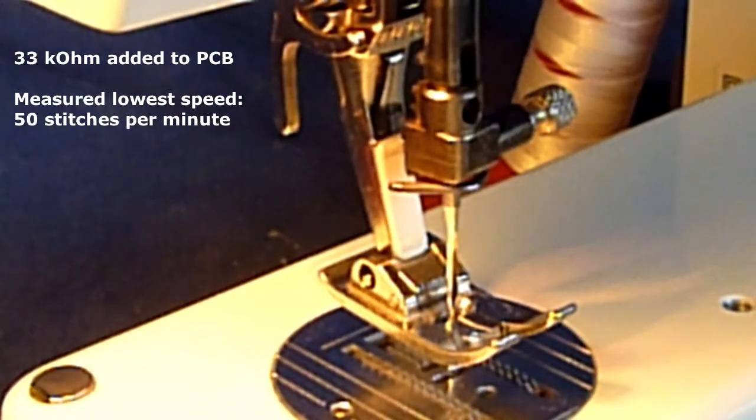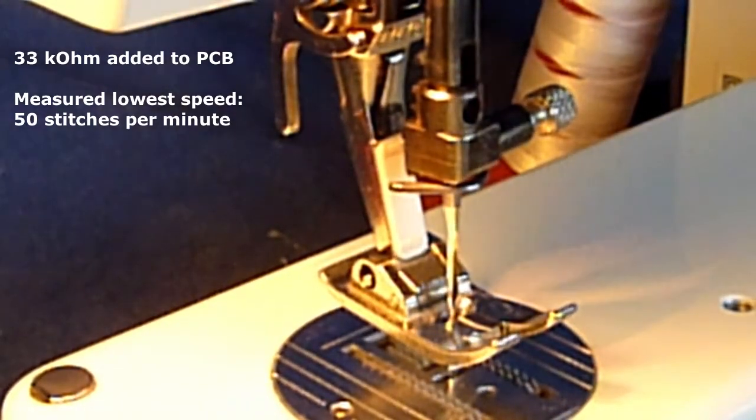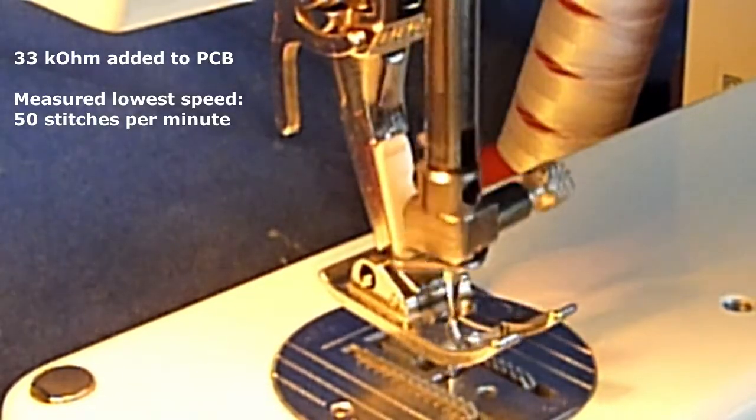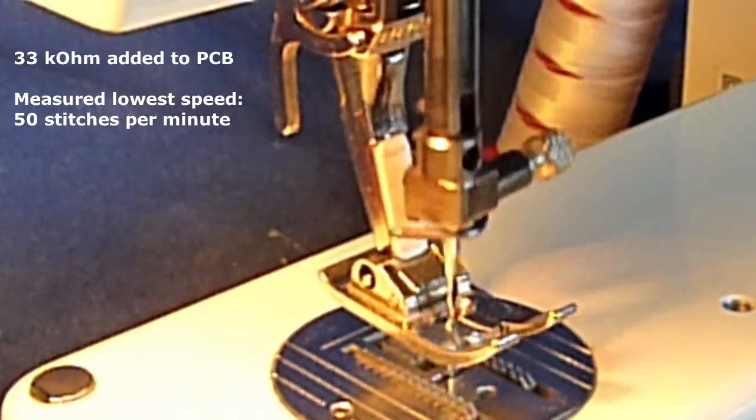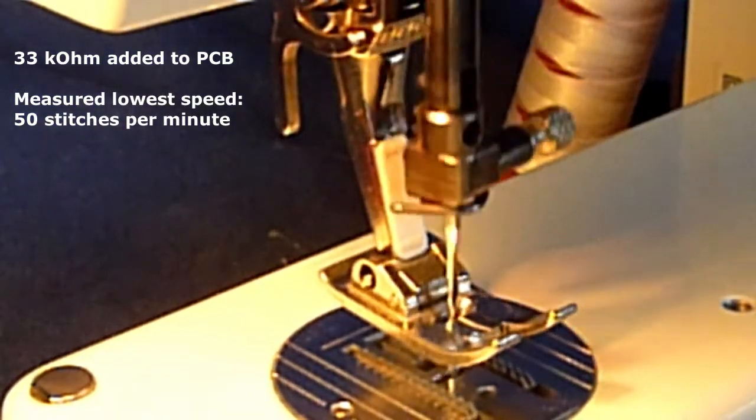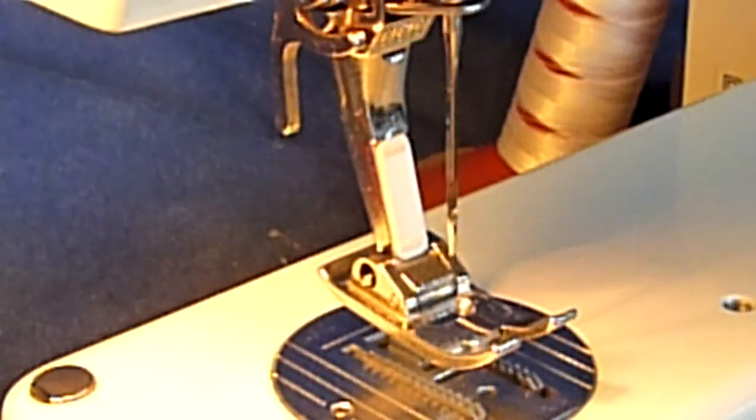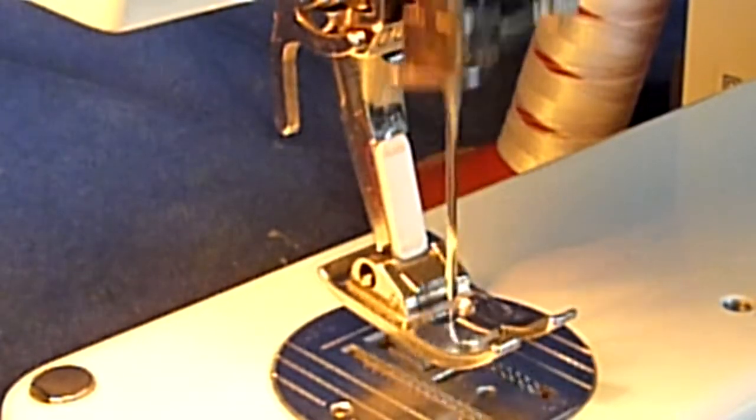There is a half speed setting. Now I set it to full speed setting but it doesn't matter for the lowest speed. The lowest speed is about 50 stitches a minute. Now I increase the speed slowly so you can see that.